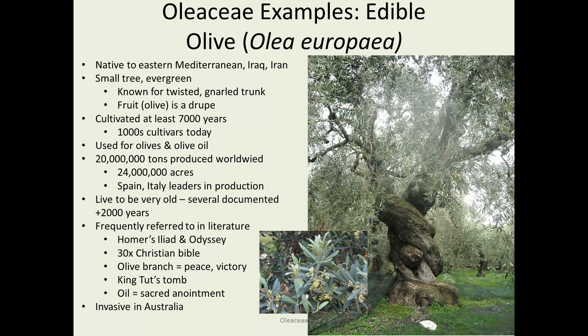Today there are over 20 million tons of olives produced worldwide, covering 24 million acres, with Spain and Italy being the leaders in production, but many other countries also producing olives and olive oil. It has been a notable tree for a long time, with many references in literature including the Bible and Homer's Iliad and Odyssey, and there was even a sprig in King Tut's tomb. Unfortunately, olives have become invasive in Australia, in areas similar to the Middle East where they're native.